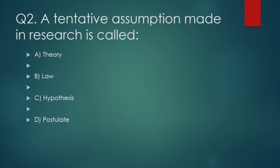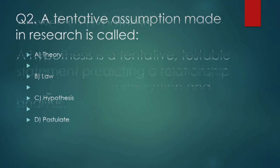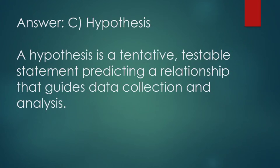A tentative assumption made in research is called: (A) Theory, (B) Law, (C) Hypothesis, (D) Postulate. Correct answer: Hypothesis. A hypothesis is a tentative, testable statement predicting a relationship that guides data collection and analysis.